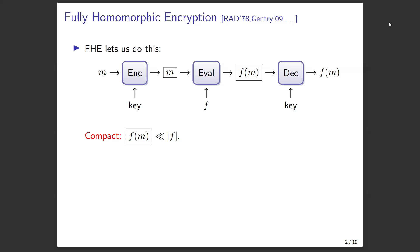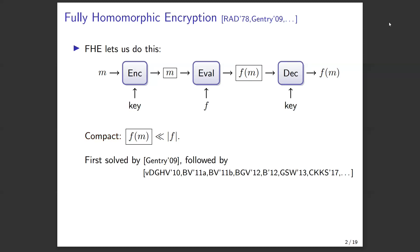This is the canonical definition of fully homomorphic encryption, and it was a holy grail sought after for three decades with no really satisfactory solutions — until Gentry gave the first credible proposal for a fully homomorphic encryption scheme. This spurred a ton of interest, with a lot of follow-up works in the years following, improving efficiency, theoretical security guarantees, and simplicity of these schemes.